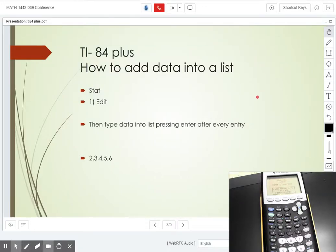This is how you add data to your TI-84 Plus. We're going to add data into a list. You go to STAT, number one, edit, then add your data and hit enter after every data point that you enter.